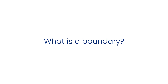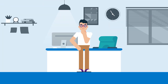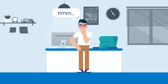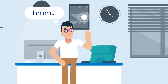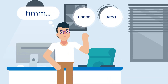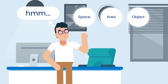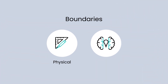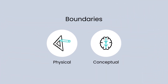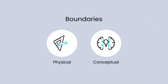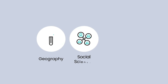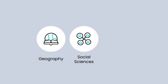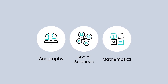What is a boundary? In its broadest sense, a boundary refers to a line or limit that defines the edge of a space, area, or object, distinguishing it from others. Boundaries can be physical or conceptual, and are used in various contexts, including geography, social sciences, mathematics, and more.